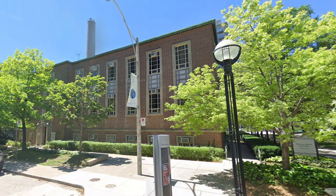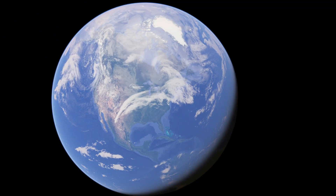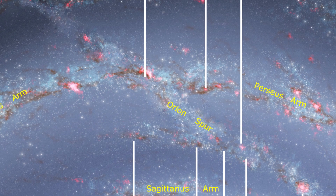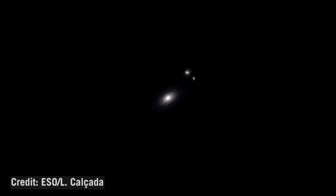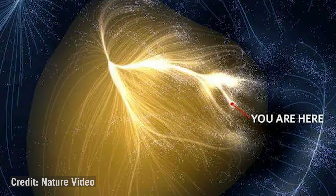The full cosmic address of the Dunlap Institute is 50 St. George Street, Toronto, Ontario, Canada, the Earth, the solar system, the Orion Spur — which is an arm in the Milky Way — the Milky Way, the local group, then the Virgo cluster, and the Laniakea supercluster. Beyond that, you could say we're in the observable universe, which is in the entire known universe.